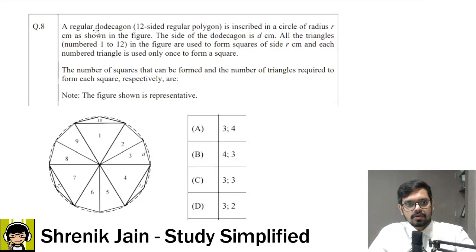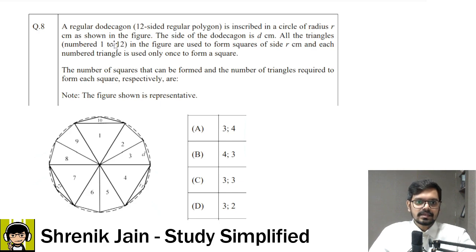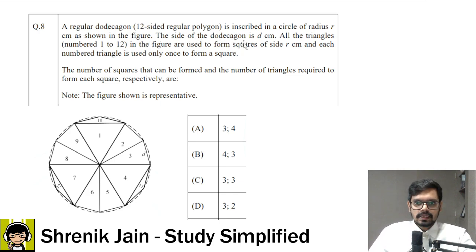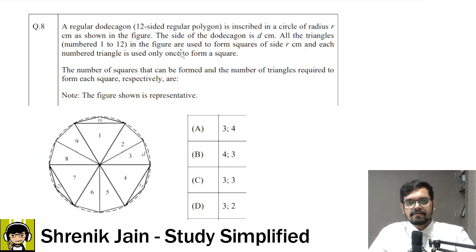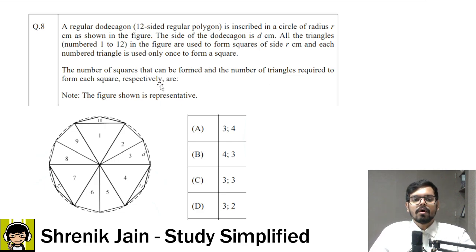The question says we have a regular dodecagon — a 12-sided regular polygon — inscribed in a circle of radius r centimeters as shown in the figure. The side of the dodecagon is d centimeters. All the triangles numbered 1 to 12 in the figure are used to form squares of side r centimeters, and each numbered triangle is used only once to form a square. The number of squares that can be formed and the number of triangles required to form each square respectively are given as four options.